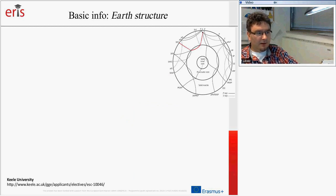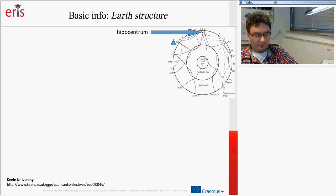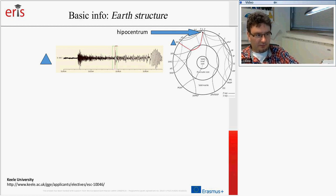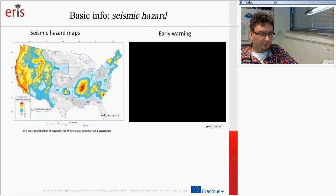It is very interesting to show how we can explain the structure of the Earth. We use here the hypocenter as the source of the earthquake. Seismic waves are very different — I'll show a basic division of seismic waves later. These seismic waves, recorded on seismic stations as seismograms, are used to obtain information about the lithosphere, crust, outer core, and inner core.